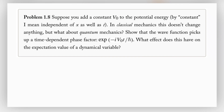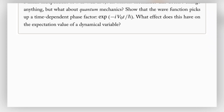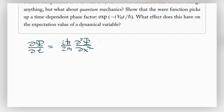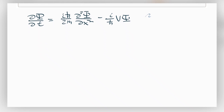We're going to start off with the Schrödinger equation. We have dψ/dt is equal to ih-bar over 2m times d²ψ/dx² minus i over h-bar times V times ψ. We're going to call this equation 1, and we'll reference back to this as we compare at the end.